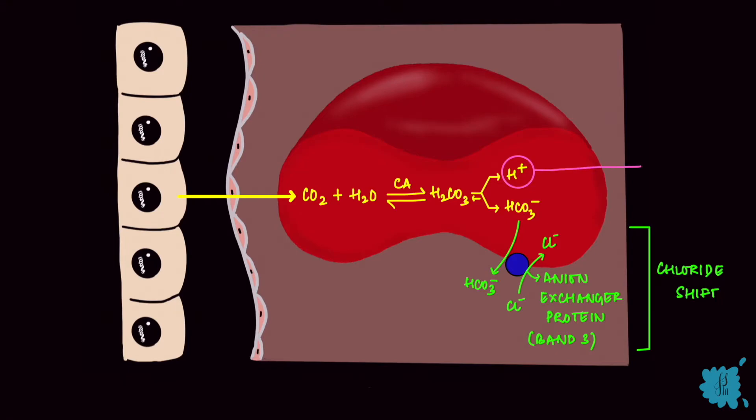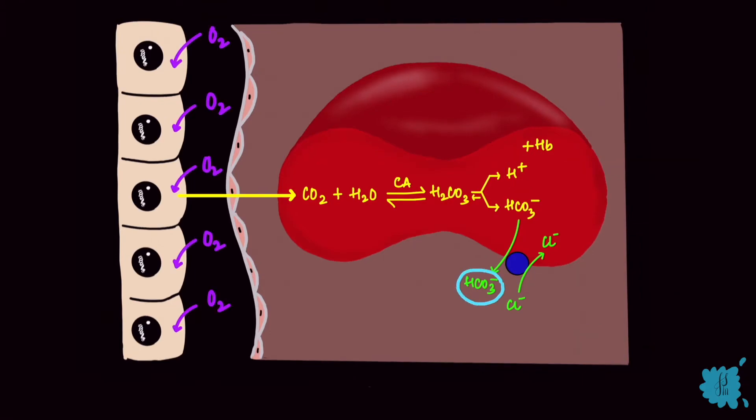If the hydrogen ions were to remain as such, it would create an acidic environment. So it gets buffered by hemoglobin. That maintains the pH of the RBC and the blood. Now the bicarbonate is in the plasma and the hydrogen ions have been buffered by hemoglobin. They travel to the lung and reach the pulmonary capillaries.